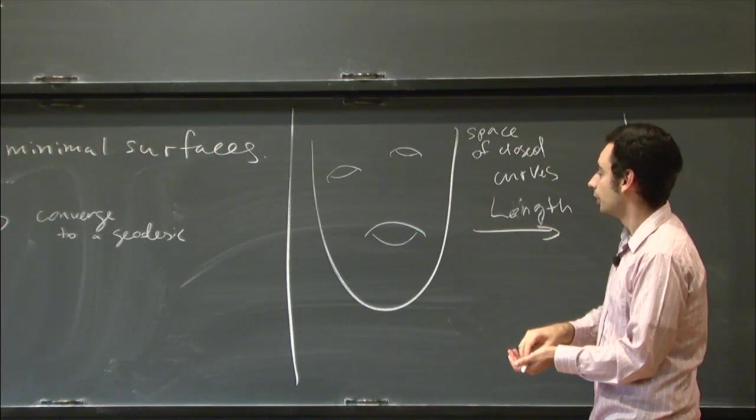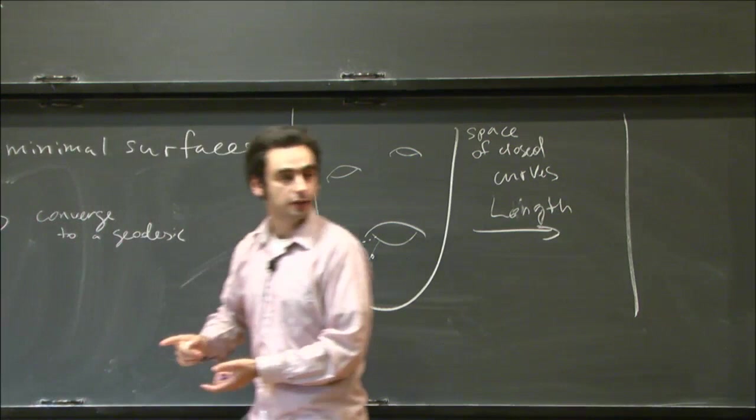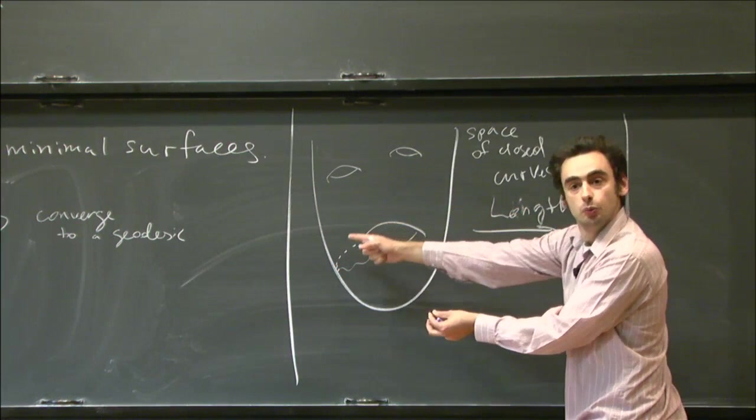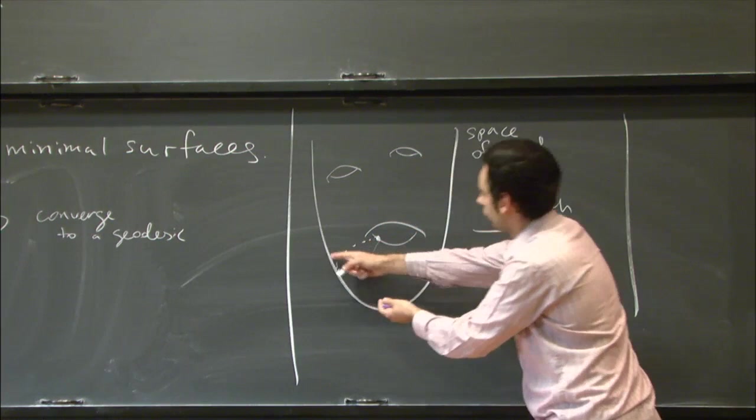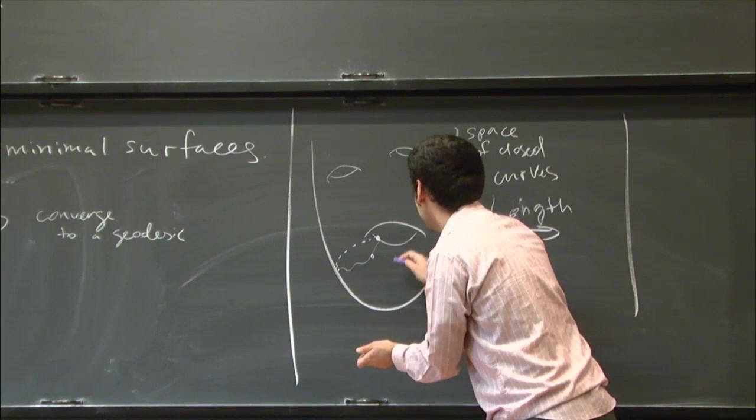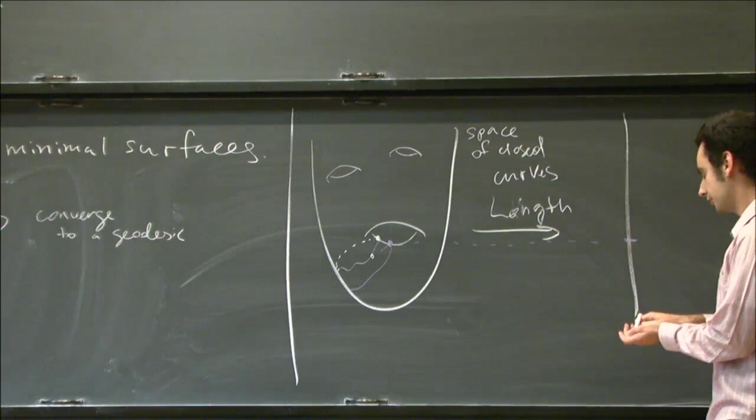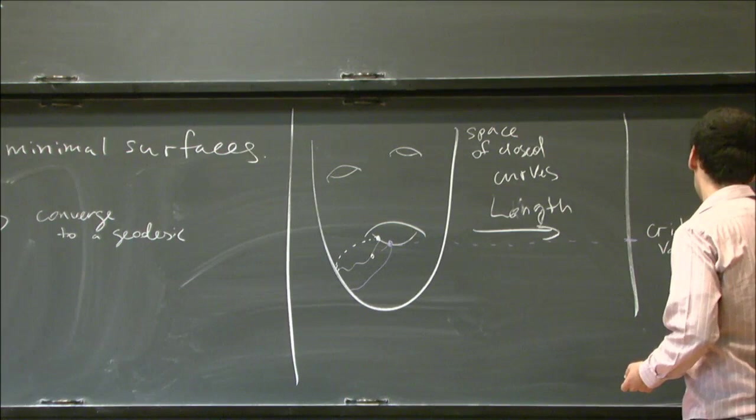This space will have some non-trivial topology. It will have some non-homologous cycles. Each point here in this space represents a closed curve in our manifold. Now we can take a non-trivial family, a loop of curves, and try to make the length of all curves in this family as small as possible, to push it down. What we will see is that this family, because it is non-trivial, will get stuck on a critical point. So this will be a critical value.